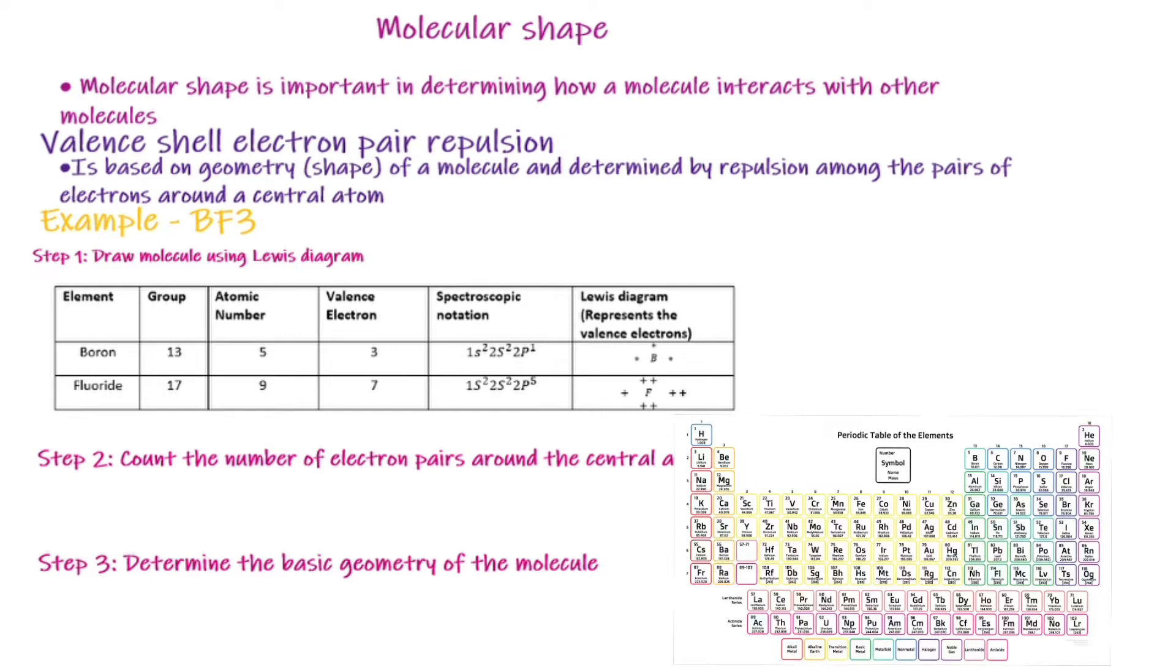Therefore, we know that the Lewis dot diagram is based on the valence electrons. Boron's structure will have 3 valence electrons around its structure.